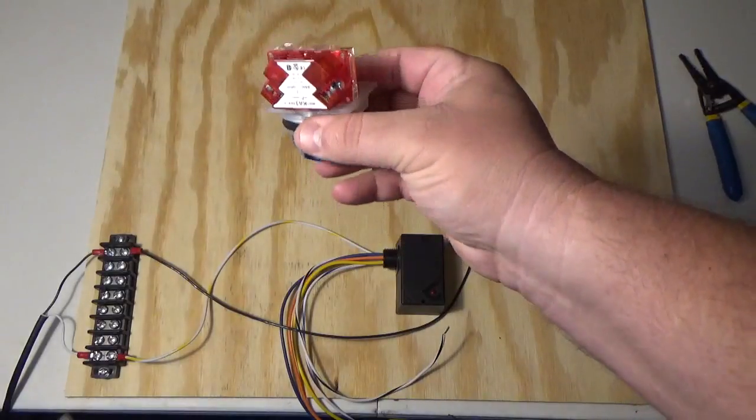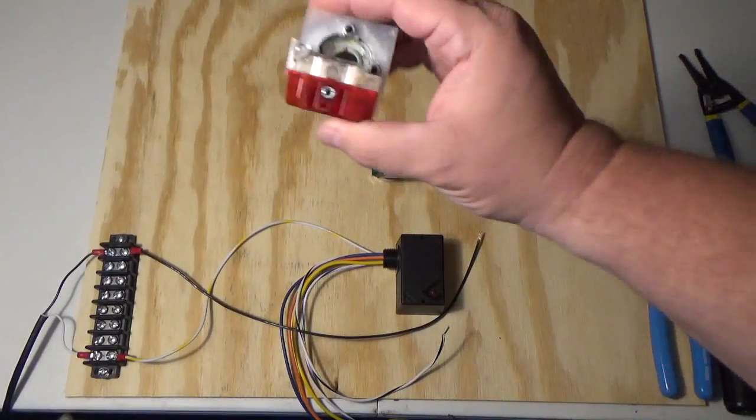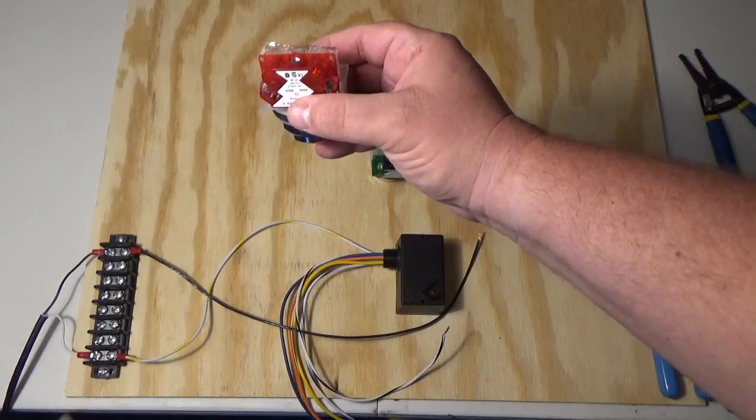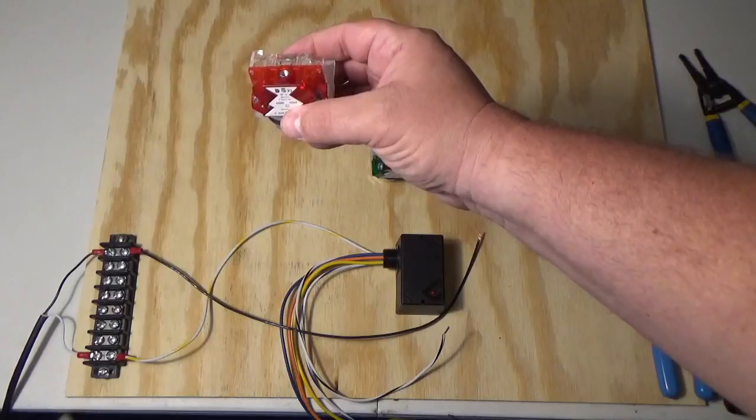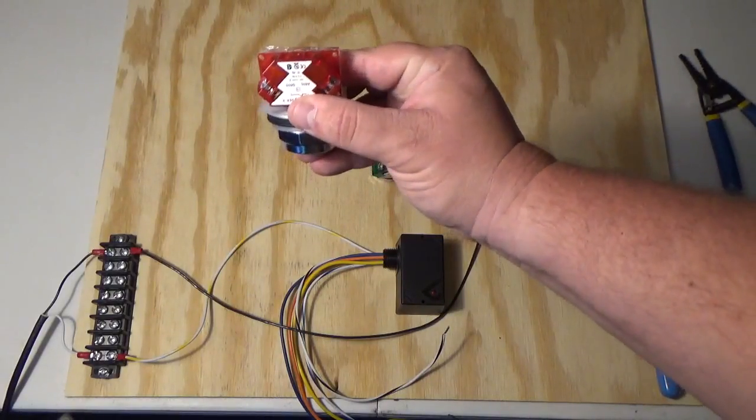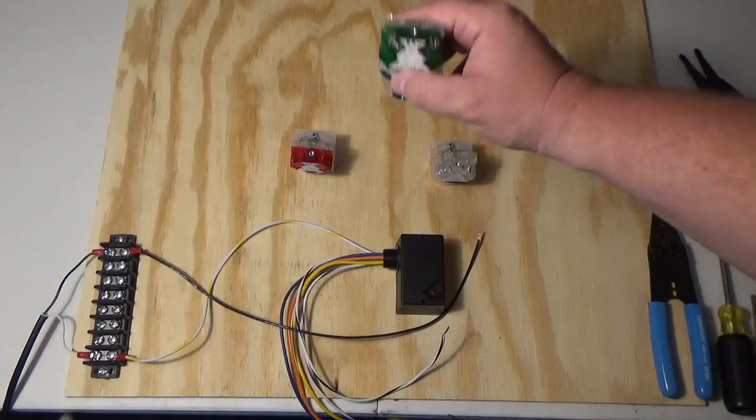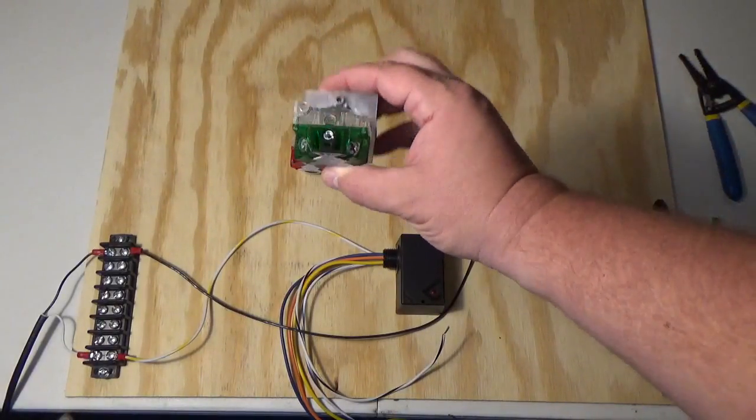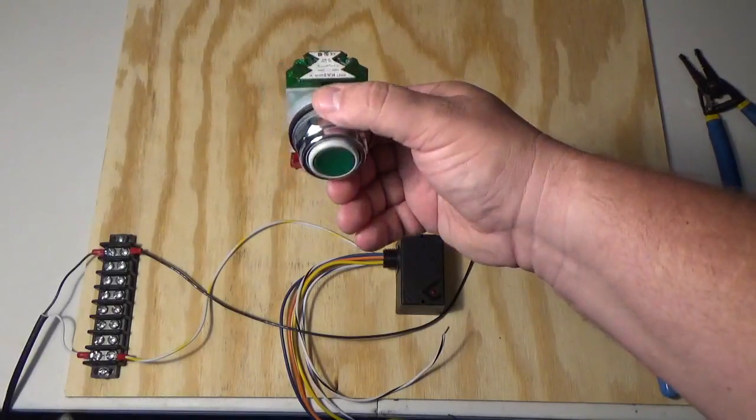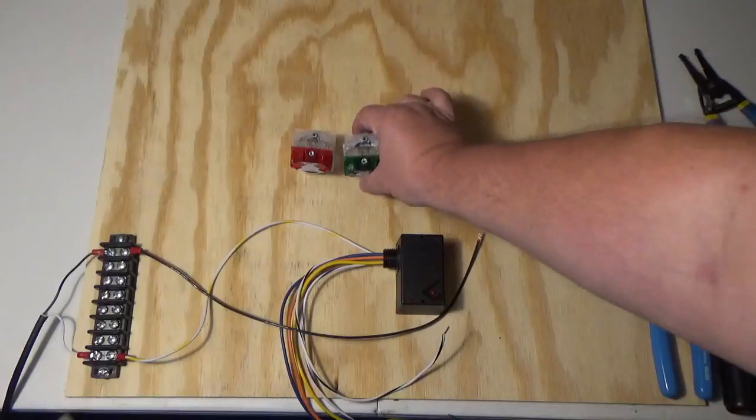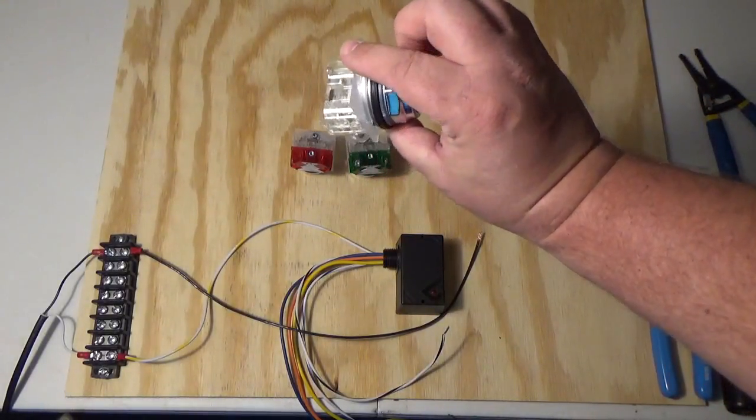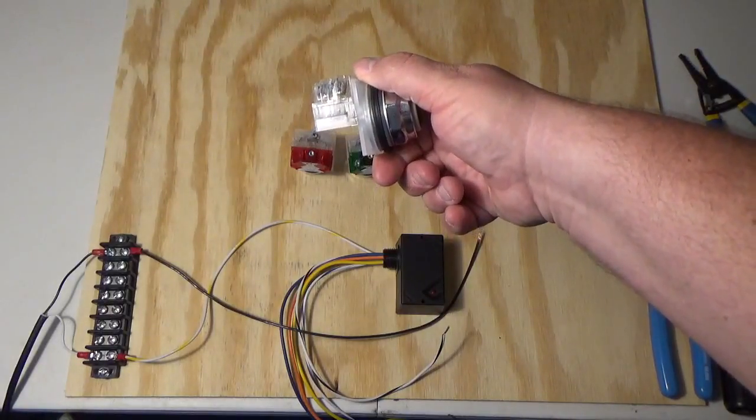Our push button has a set of contacts on it. This is just one style of contacts and push buttons that we use. This is a normally closed. If you go back in the video you'll see I drew the contacts in red so you would understand that red is normally closed. This is a normally open, drawn in green, and I have a green set of contacts.